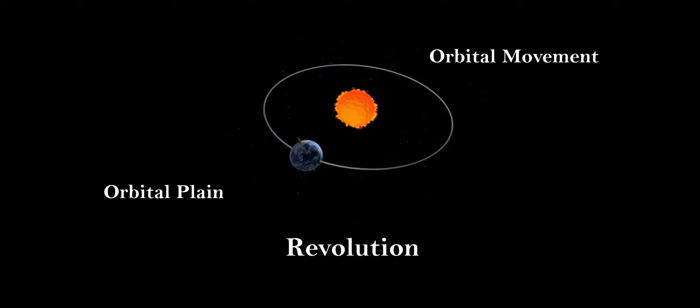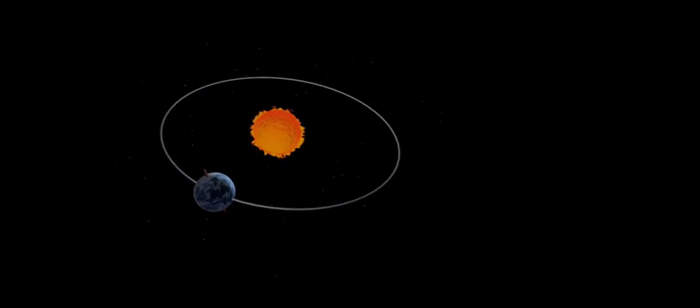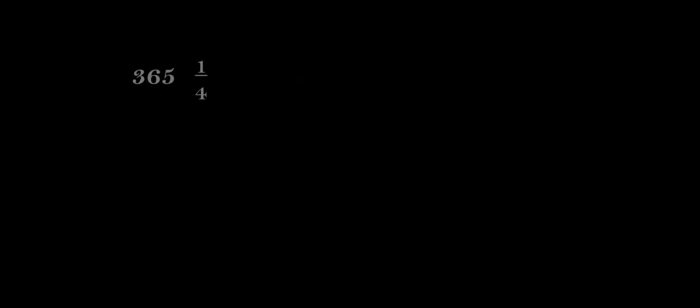It takes 365 and one fourth days to revolve around the sun. We consider a year as consisting of 365 days only and ignore six hours for the sake of convenience.